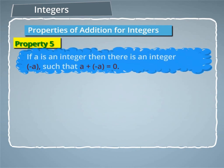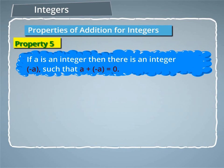Property 5: If A is an integer, then there is an integer minus A such that A plus minus A is equal to 0.